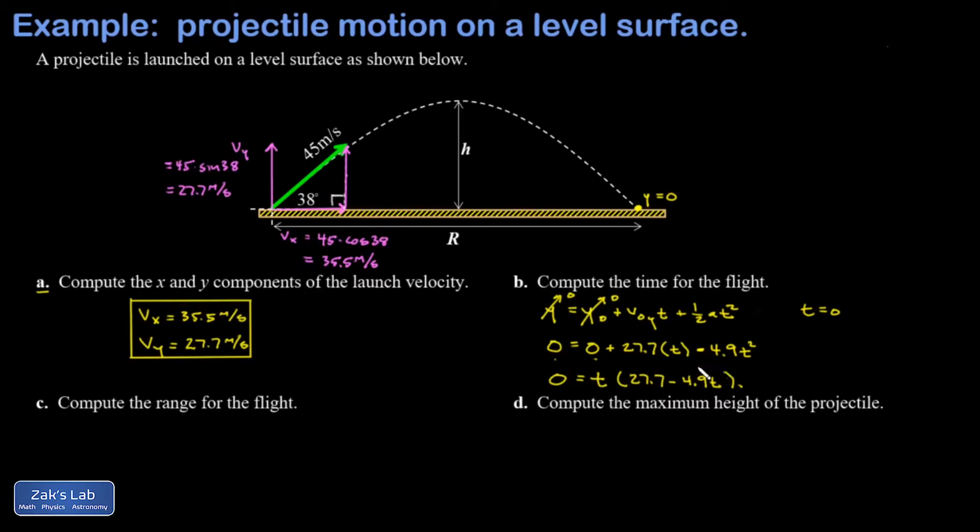And the harder one is found by setting this other factor equal to zero. So when that factor is equal to zero the equation is also true. Setting 27.7 minus 4.9t equal to zero, I can then add 4.9t to both sides and then divide both sides by 4.9, and I get t. So that's 27.7 over 4.9, and I get that t is equal to 5.65 seconds.